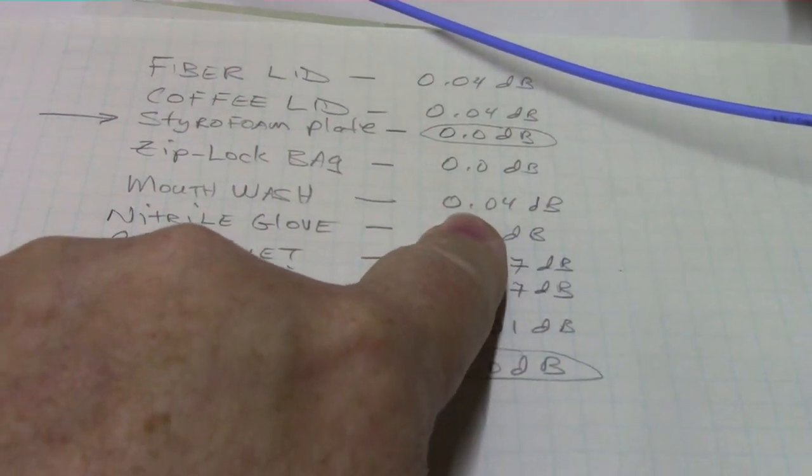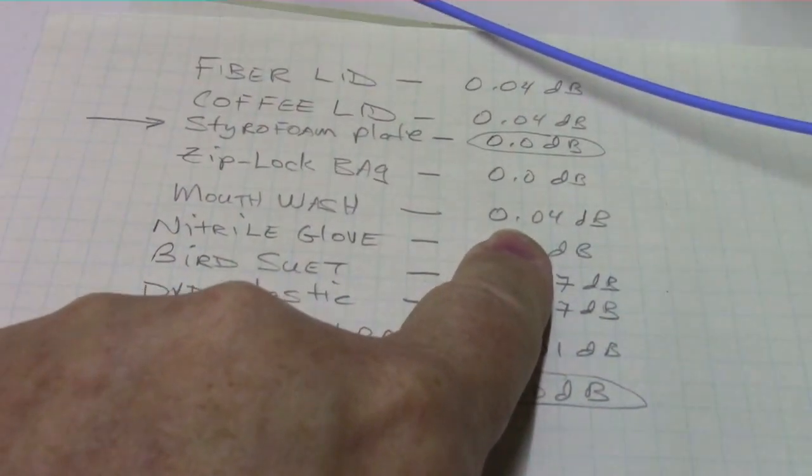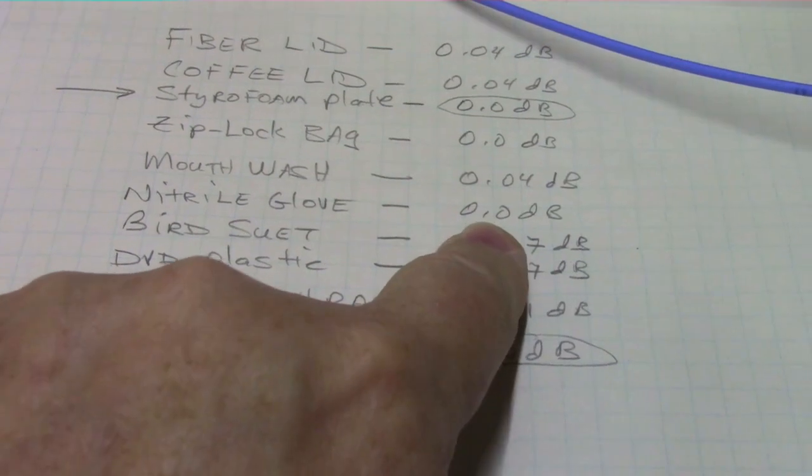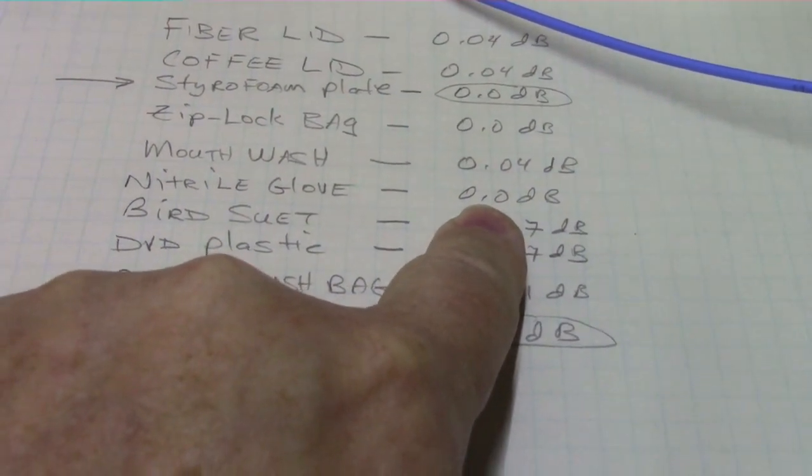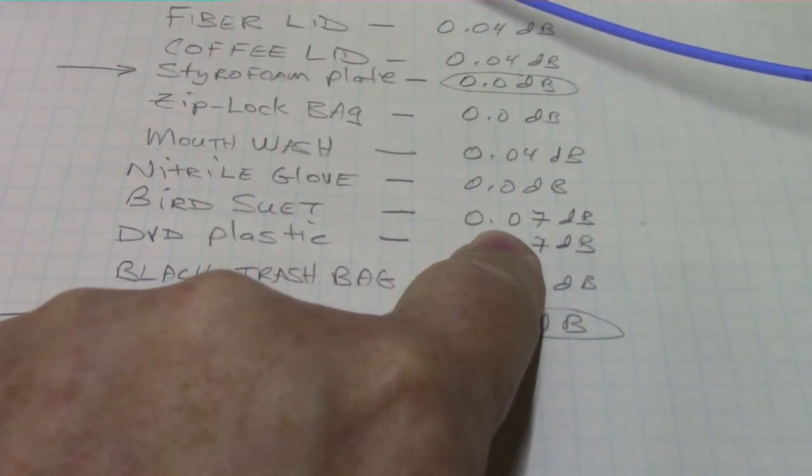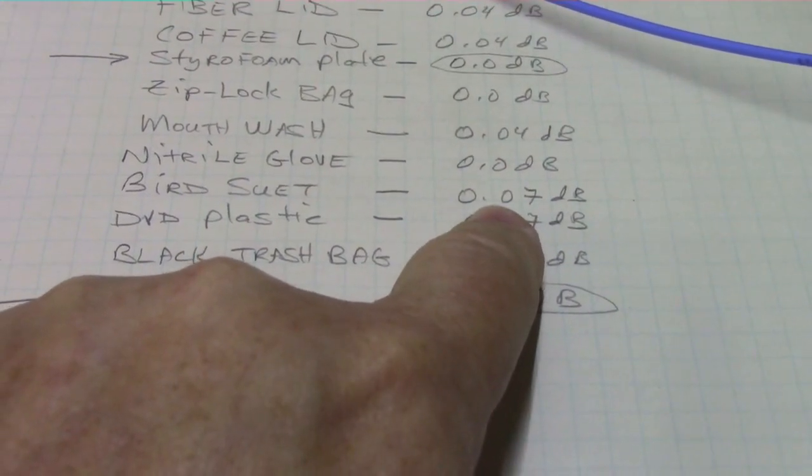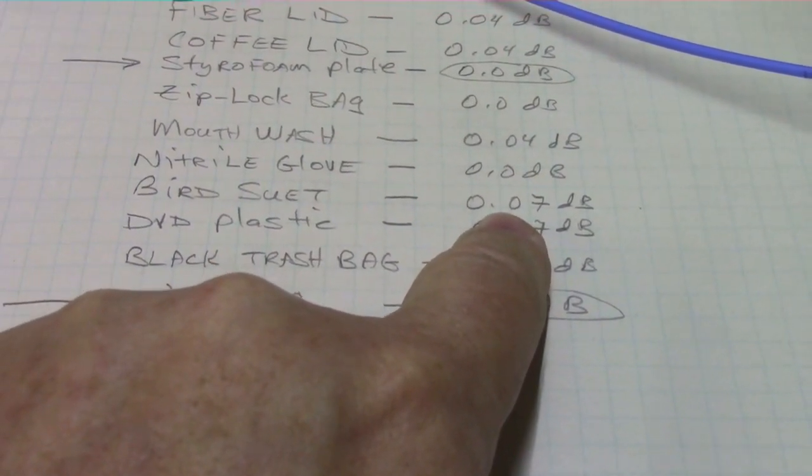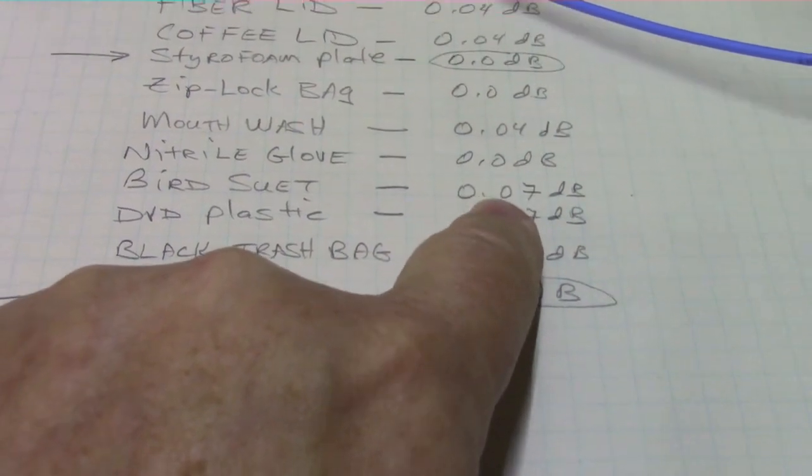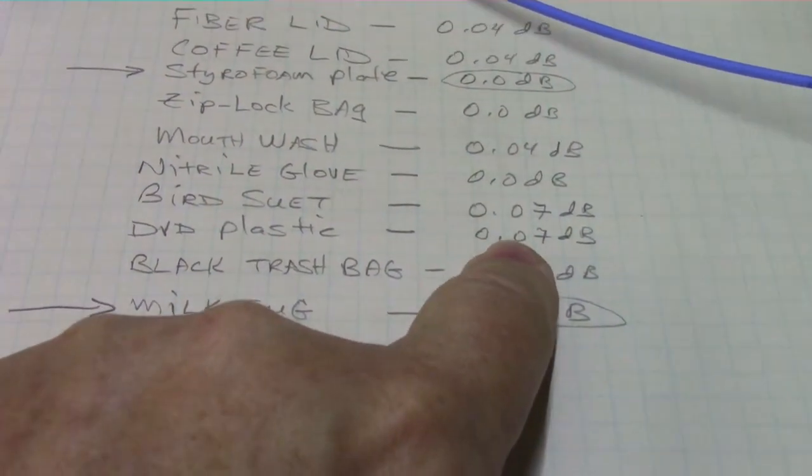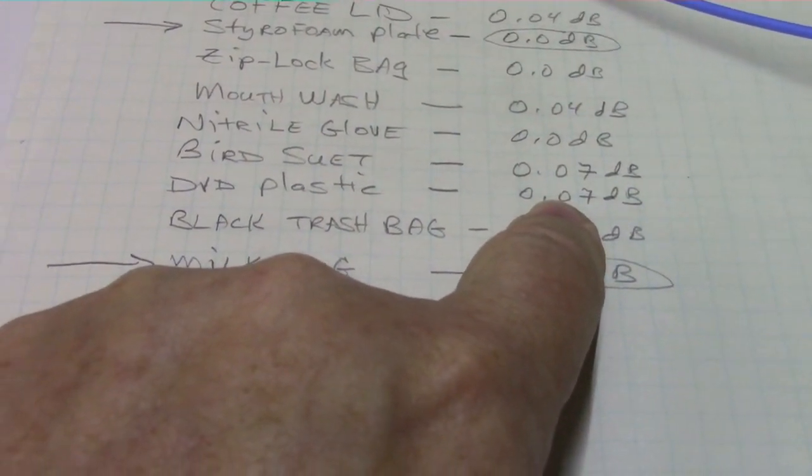The mouthwash plastic, 0.04 dB loss. The nitrile glove, one layer, was 0 dB. The suet plastic, which is interesting, I measured that twice, 0.07 dB. And it was very thin, but surprisingly, whatever plastic it is, a little bit more attenuation at 10 gig.